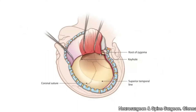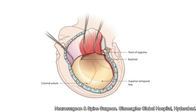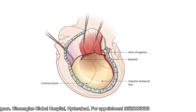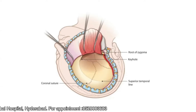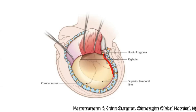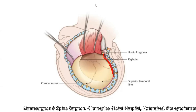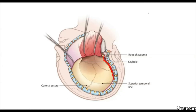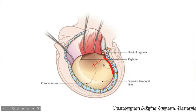Now you will have to deal with the temporalis muscle. We incise the temporalis muscle either with a knife. I prefer to incise with a monopolar along the posterior edge of the incision as shown in the picture. Once I incise this, I use a periosteal elevator to separate the muscle.